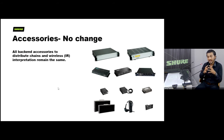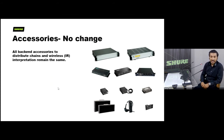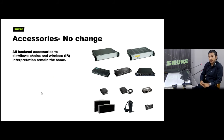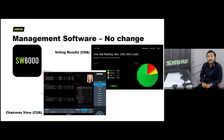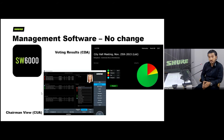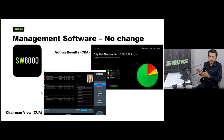The accessories for distribution of chains or for wireless interpretation transmission all remain the same — they do not change from the DIS family. The Software 6000 platform also remains unchanged. There is no change with respect to the MXC605 product or the CCU firmware update — the software running on a separate PC will still work with all these units and deliver all the features it is designed to deliver.